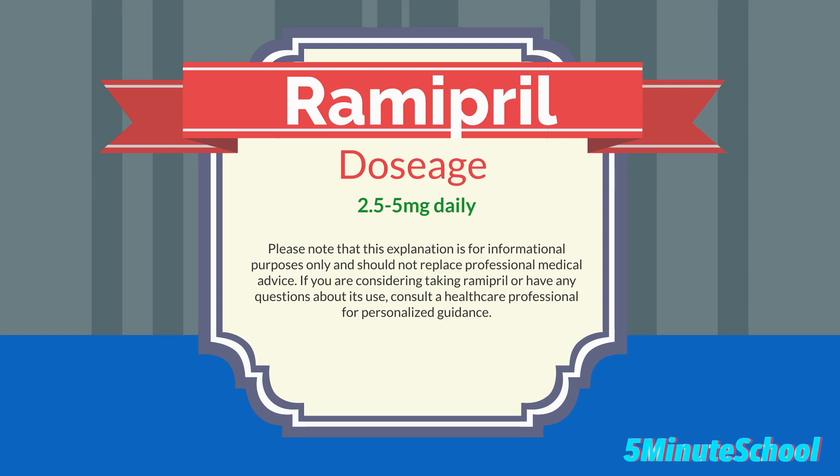The dosage of Ramipril depends on the individual patient's condition, response to treatment and other factors. Typically the initial dosage for adults with hypertension is 2.5 to 5 milligrams once daily, with dose adjustments made as needed to achieve the desired blood pressure control. For other cardiovascular conditions the dosage may vary, and it's essential to follow the prescribed instructions and regularly consult with a healthcare professional for appropriate monitoring.